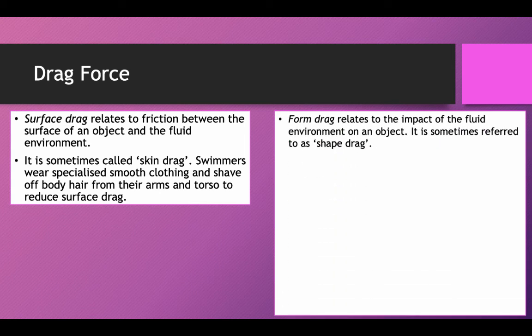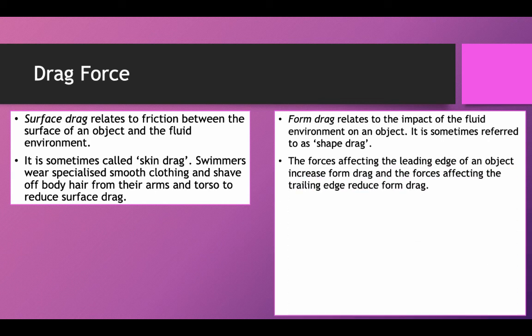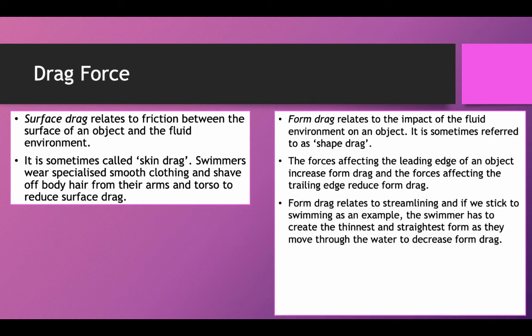Form drag relates to the impact of the fluid environment on an object. It is sometimes referred to as shape drag. The force affecting the leading edge of an object increases drag, and a force affecting the trailing edge reduces form drag. Form drag relates to streamlining, and if we stick to swimming as an example, the swimmer has to create the thinnest and straightest form as they move through the water to decrease form drag.